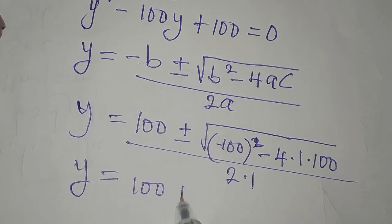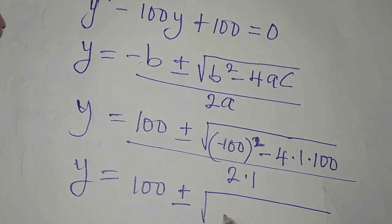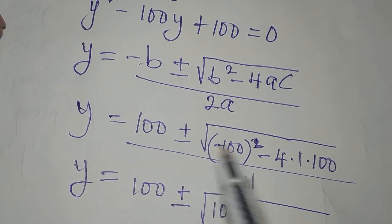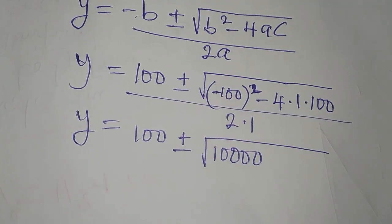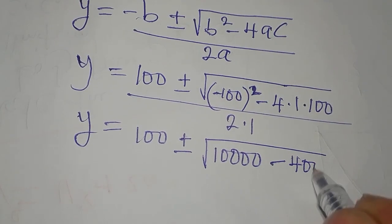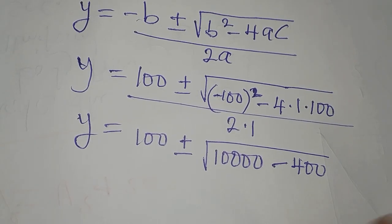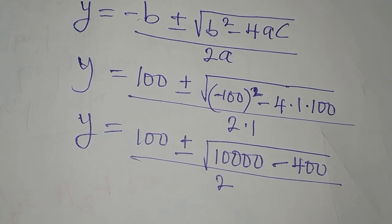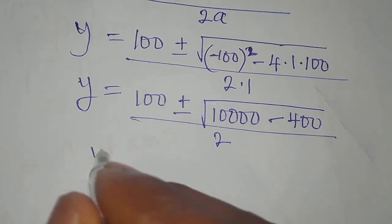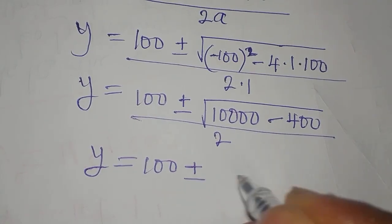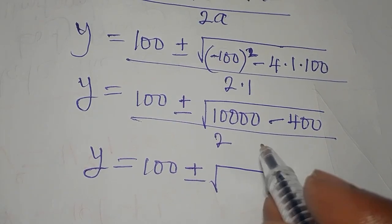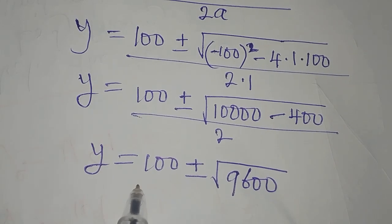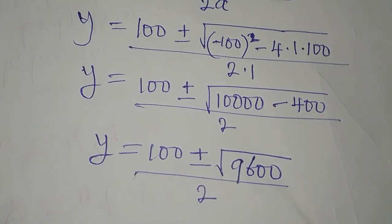Continuing, we have y equal to 100 plus or minus the square root of: 100 times 100 is 10,000 — the negative multiplies itself to give positive — minus 4 times 100 which is 400. So we have the square root of 10,000 minus 400, which is 9,600, all over 2.